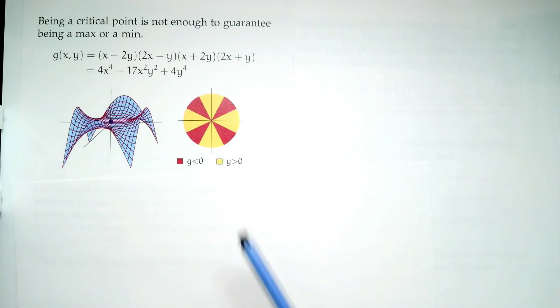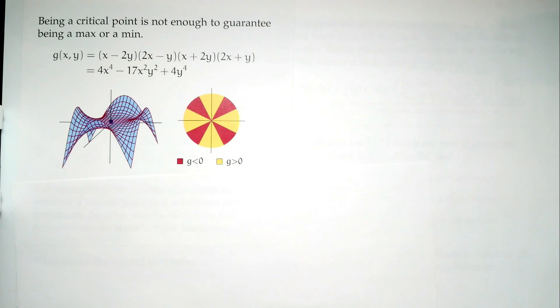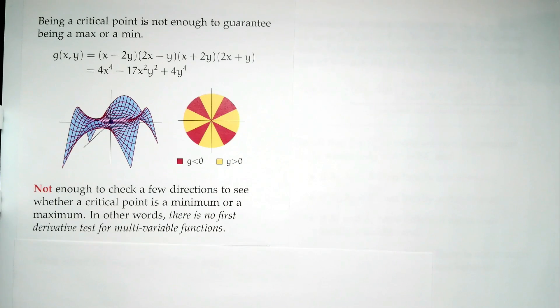From the x-direction and y-direction, it looks like a minimum at (0,0). But am I at a minimum? No! If I go along y = x or y = -x, I come from a negative value to zero, then negative again — so in some directions it looks like a minimum, in others a maximum. It's kind of like a saddle — a very fancy saddle — for those rare eight-legged horses.